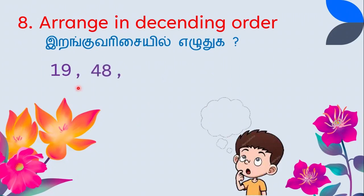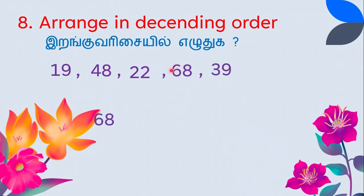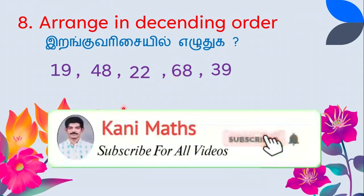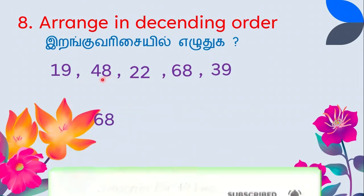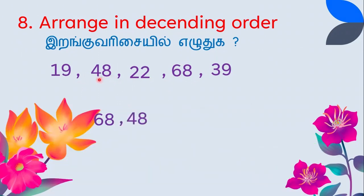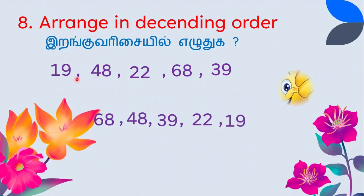Arrange in descending order: 19, 48, 22, 68, and 39. Looking at the tens place — all are different. The big tens digit is 6, so 68 comes first; next is 4, so 48; next is 3, so 39; next is 2, so 22; and finally 1, so 19. Descending order: 68, 48, 39, 22, 19.